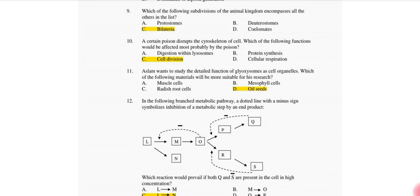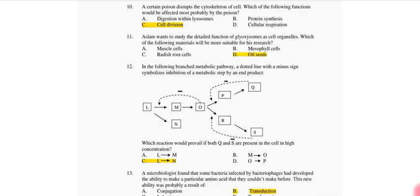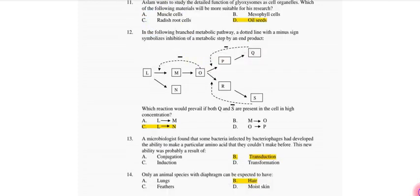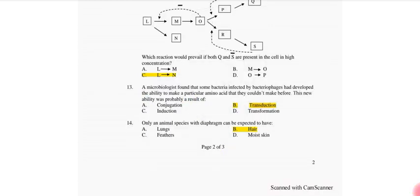You want to study the detailed function of glyoxysomes as cell organelles. Which of the following material would be more suitable for the research? In the following metabolic pathway, a dotted line with a minus sign symbolizes inhibition of a metabolic step by end product. Which direction would prevail if both Q and S are present in cell in high concentration? So that is L into N. A microbiologist found that some bacteria infected by bacteriophage had developed the ability to make a particular amino acid that they couldn't make before. This new ability was probably a result of transduction.